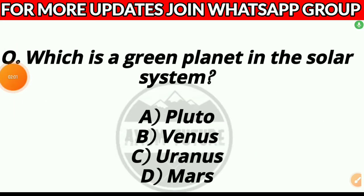Question 8. Which is the green planet in the solar system? Option A, Pluto; Option B, Venus; Option C, Uranus; or Option D, Mars. Answer: Option C, Uranus.